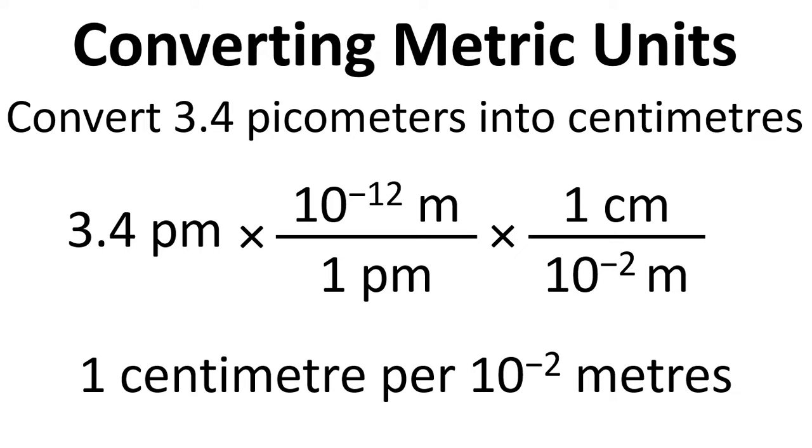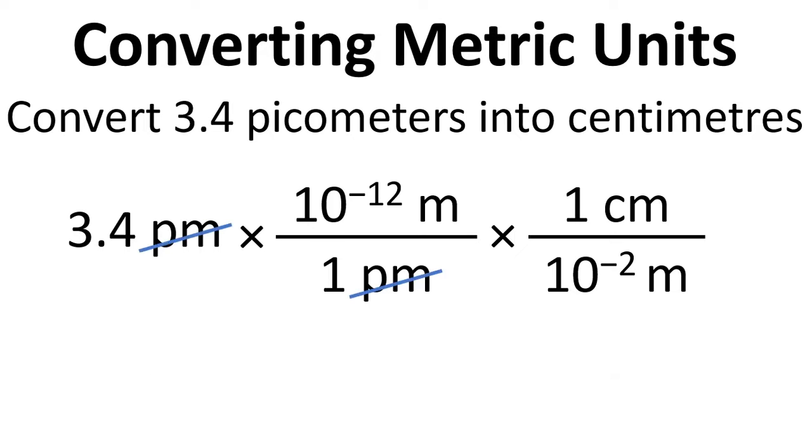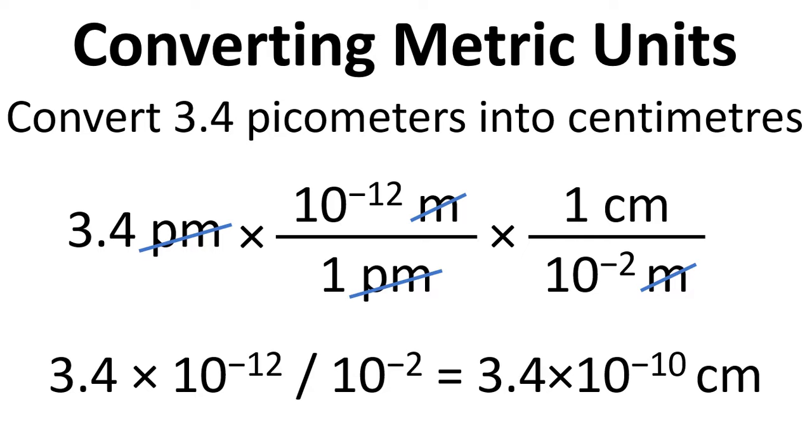And if we write that down and cancel things out, we can see that the picometres cancel out, the metres cancel out, and we're just left with centimetres. So if we calculate this through, we end up with 3.4 times 10 to the minus 10 centimetres.